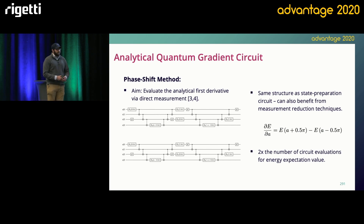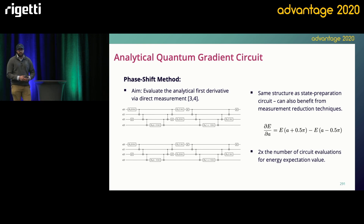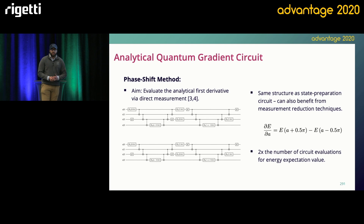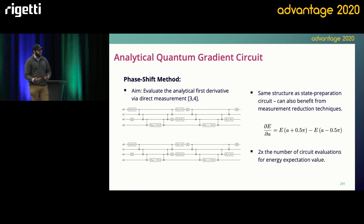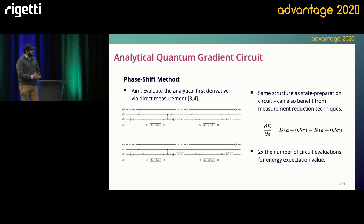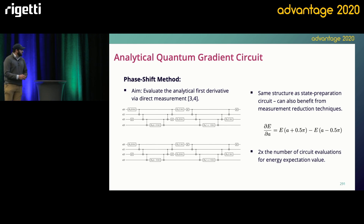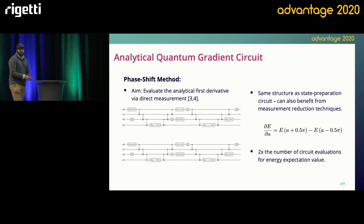The initial AdaptVQE paper was just a simulation on a state vector simulator and didn't provide quantum circuits to calculate the gradient — that's something we had. The quantum gradient is basically two state preparation circuits shifted by +π/2 and −π/2. The benefit of the parameter shift method compared to ancilla-based gradient methods is that we can make use of measurement reduction techniques.